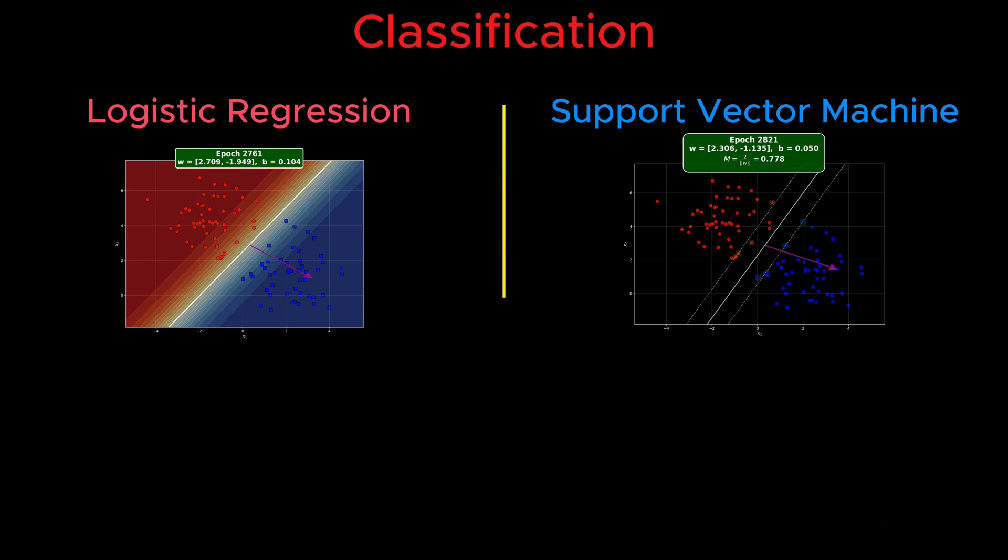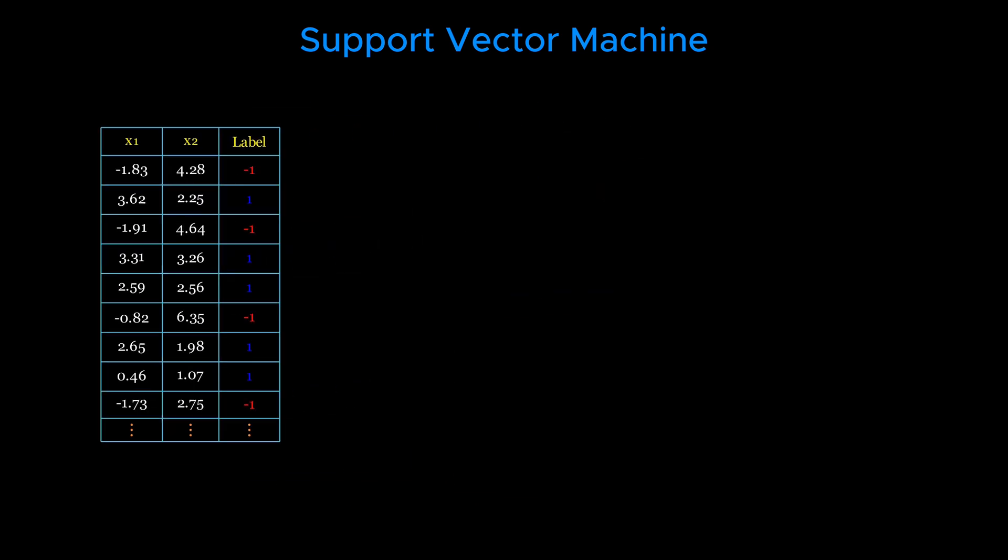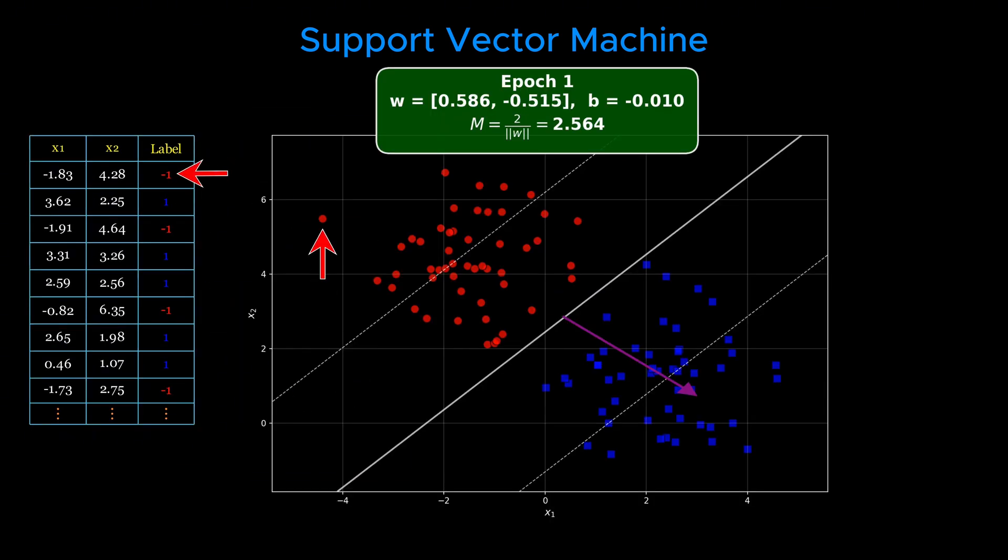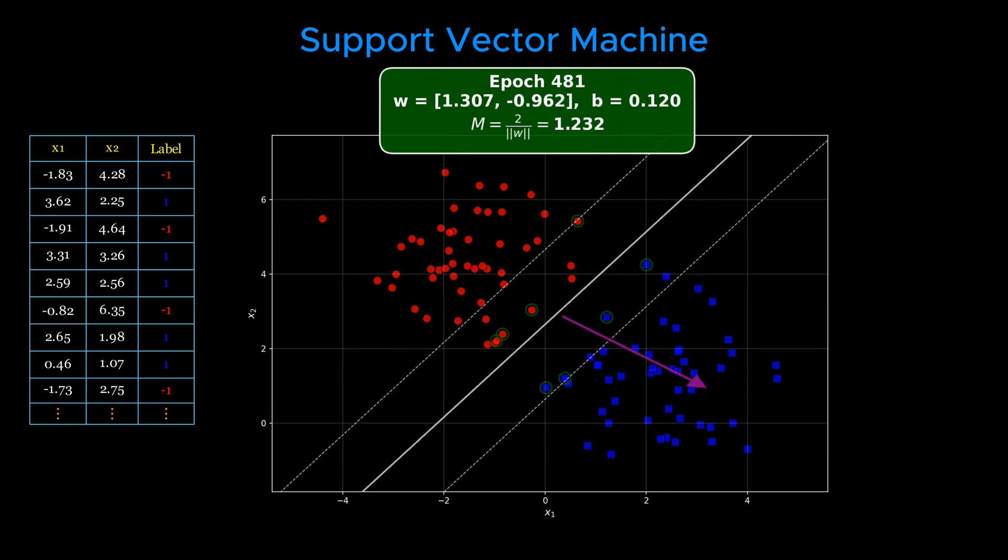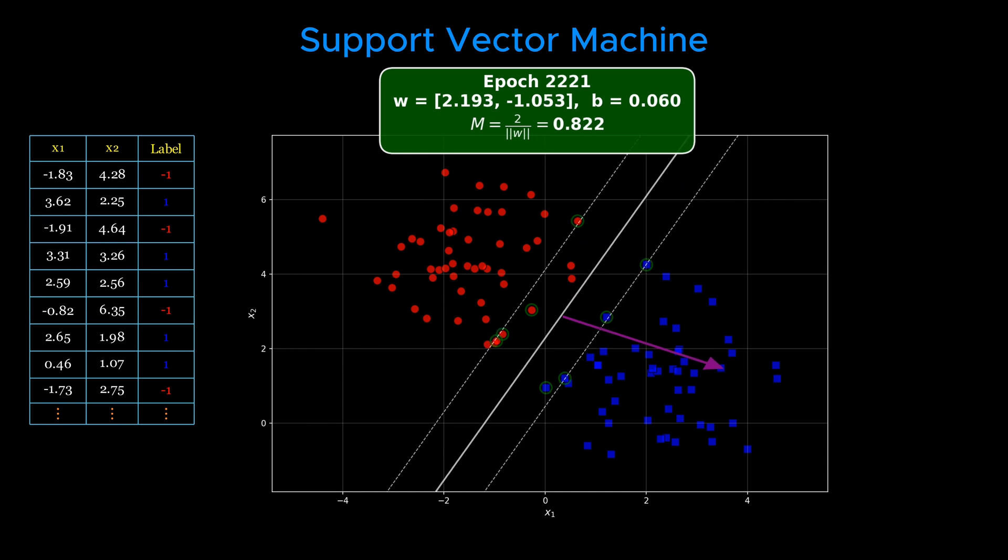Let's first see how SVM works. Suppose we have a data set with two features, X sub 1 and X sub 2, and a label Y that can be either negative 1 or positive 1. We plot the points, using red for negative 1 and blue for positive 1. The goal of SVM is to find a decision boundary, a line, or a hyperplane in higher dimensions, that separates the two classes as clearly as possible.